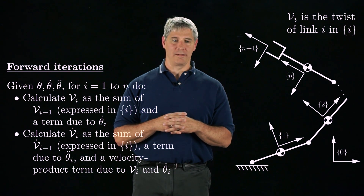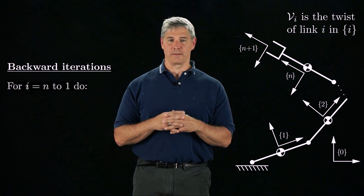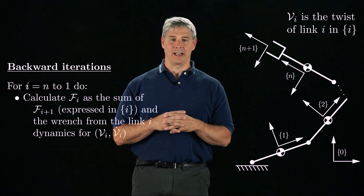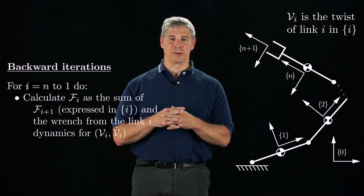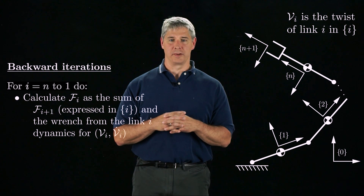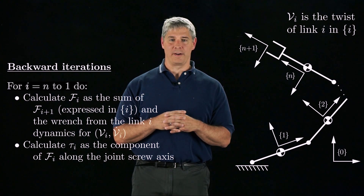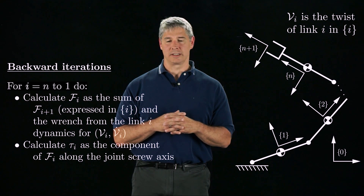After the forward iterations are completed, we have the configuration, twist, and acceleration of each link. Now we perform the backward iterations, calculating the required joint forces and torques, starting from joint n and moving backward to joint 1. We calculate the wrench f_i required for link i as the sum of the wrench f_{i+1} — the wrench needed at link i+1 expressed in the i-frame — plus the wrench needed to accelerate link i, using the inverse dynamics of a rigid body derived in the previous video. Then we calculate tau_i as the component of the wrench f_i along the joint screw axis. Only that portion of the wrench has to be applied by the joint motor; the rest is provided passively by the mechanical structure of the joint, such as the bearings.